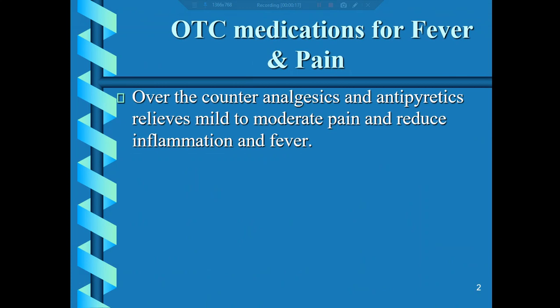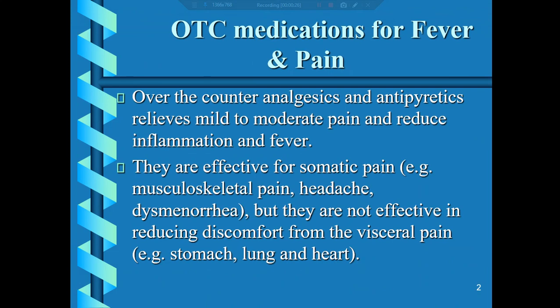Over-the-counter analgesics relieve mild to moderate pain and reduce inflammation and fever. They are effective for somatic pain such as musculoskeletal pain, headache, dysmenorrhea, and back pain. But they are not effective in reducing discomfort from visceral pain such as stomach, lung, and heart pain, including cancer pain, ischemic heart disease, and myocardial infarction — for which opioids are effective.